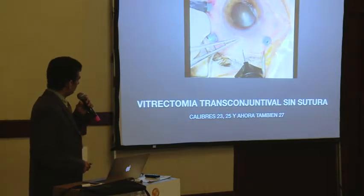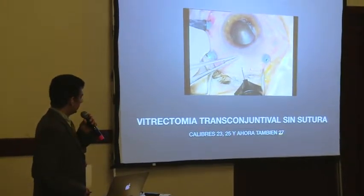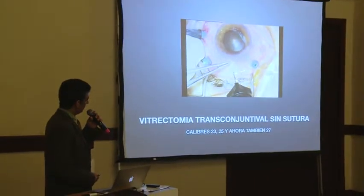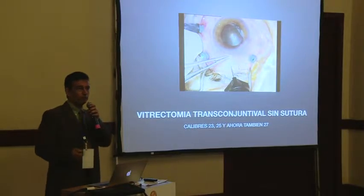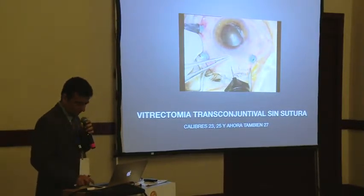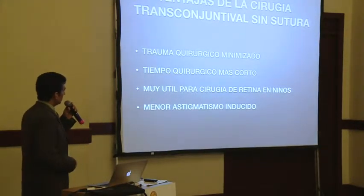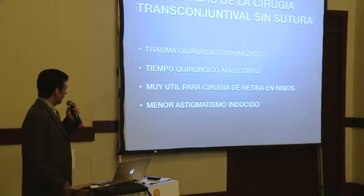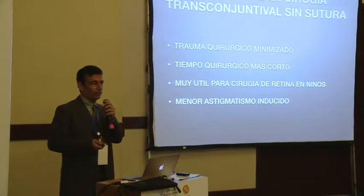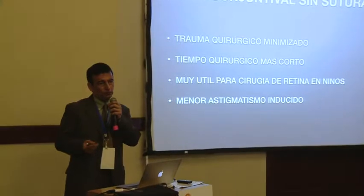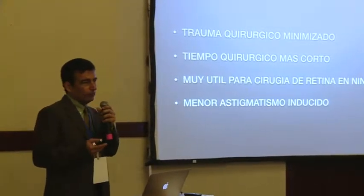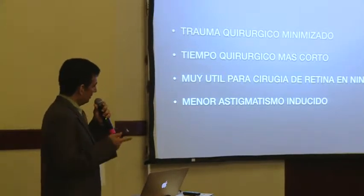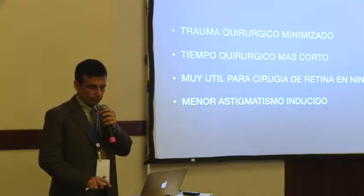Esta es la vitrectomía transconjuntival sin sutura, que empezó en el 2002, en calibres 23, 25, y en este último año calibre 27 también. Son trocarizadas: son cánulas que entran con un trocar y a través de ellas se saca y se mete instrumento sin necesidad de suturar posteriormente las esclerotomías. Las ventajas son: trauma quirúrgico minimizado, tiempo quirúrgico más corto, y es muy útil para cirugía de retina en niños. Los instrumentos calibre 20 eran muy gruesos para un niño en retinopatía de prematuridad — niños de uno, dos o tres meses con un ojo de 20 milímetros de diámetro — y hay además menor astigmatismo inducido después de la operación.